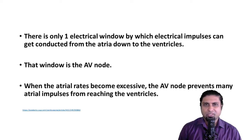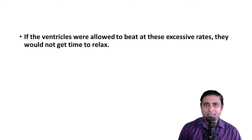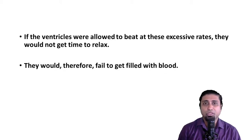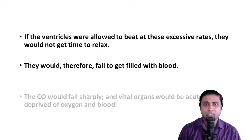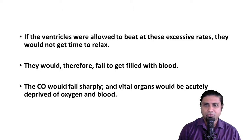When the atrial rates become excessive, the AV node prevents many atrial impulses from passing down to the ventricles — and thank goodness that it does. Because if the ventricles were allowed to beat at these excessive rates, they would not get time to relax, and if the ventricles do not relax, they do not fill with blood. If they don't fill with blood, they are not going to eject any blood, and therefore the cardiac output would fall sharply. Vital organs would be acutely deprived of oxygen and blood, causing multi-organ failure.